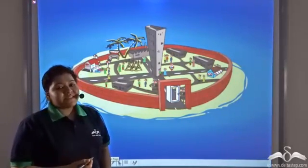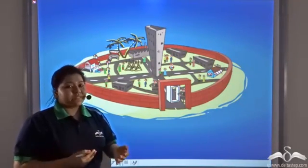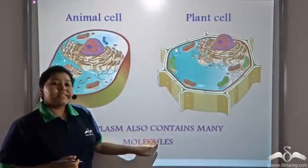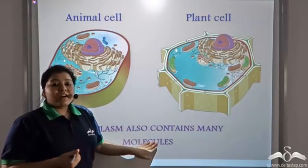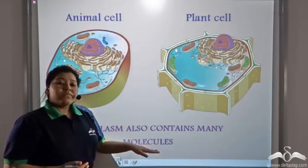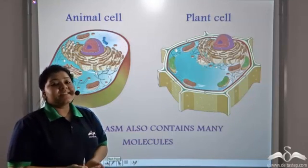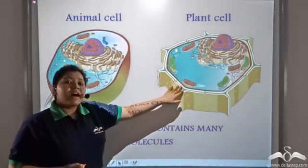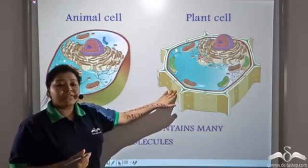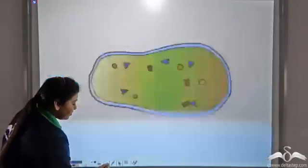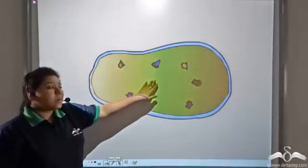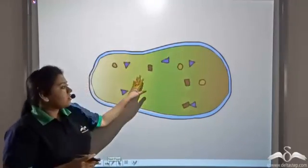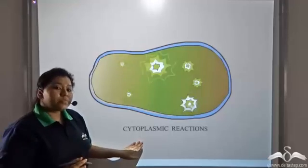Now a lot of people started living in the city, so people started interacting with each other. Similarly, there are many molecules present in the cytoplasm, like lipids, carbohydrates, and proteins, which interact with each other. The cytoplasm of both animal and plant cells is very important for the proper functioning of the cell. The different molecules present inside the cytoplasm interact with each other and this phenomenon is known as cytoplasmic reactions.